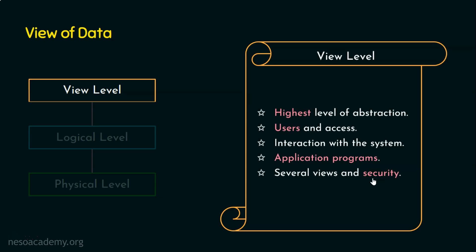All data are stored in a central place. In a banking environment, a normal user can access only his own data. A teller may access some more data than the normal user to assist customers. The bank manager has more privileges compared to other users in his branch, and the regional manager has even more privileges than the branch manager. This doesn't mean data are stored separately for every user — all data are stored in the same database, but there exist multiple views.